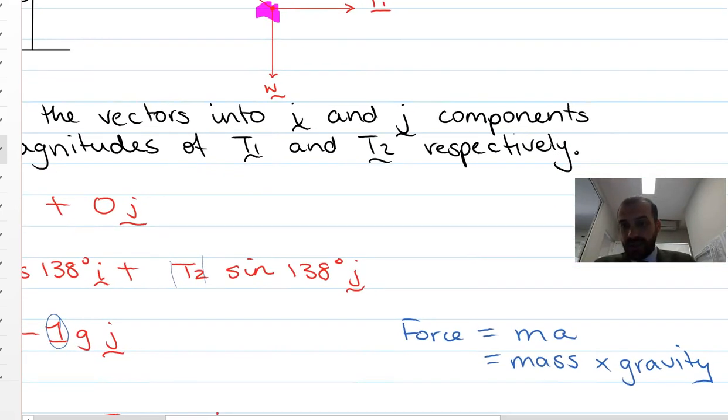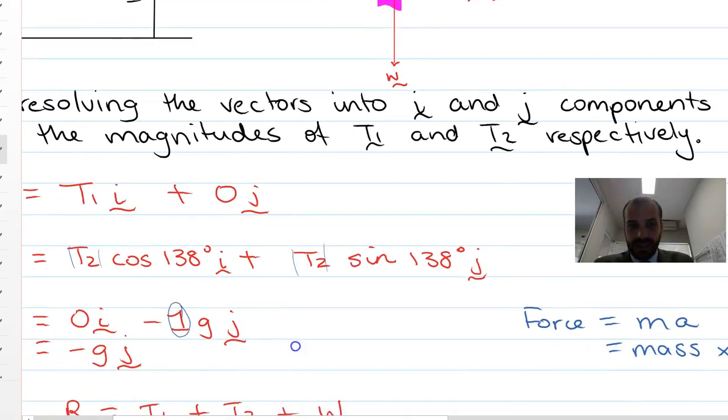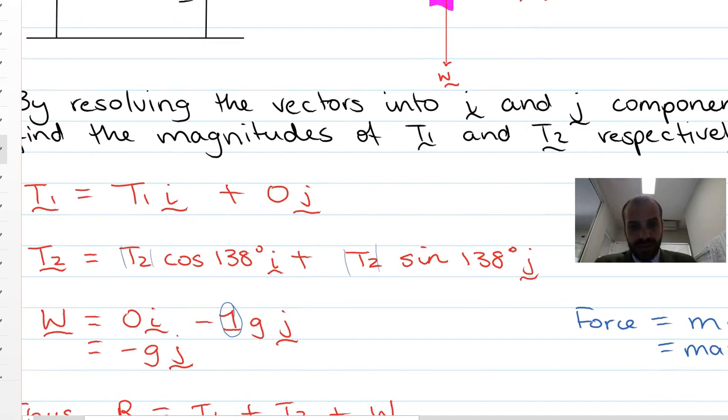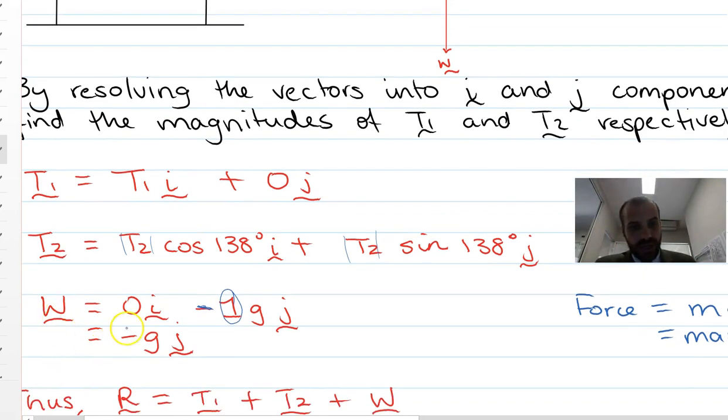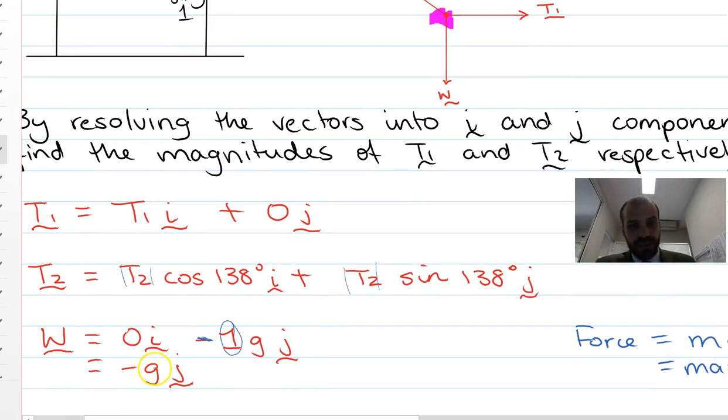We can use our little thing here. Force equals mass times gravity. Okay, so it's one. Now gravity is 9.8. Negative 9.8. Gravity is pulling downwards. So it's negative 9.8. So what we get now is just the weight component is negative g j.